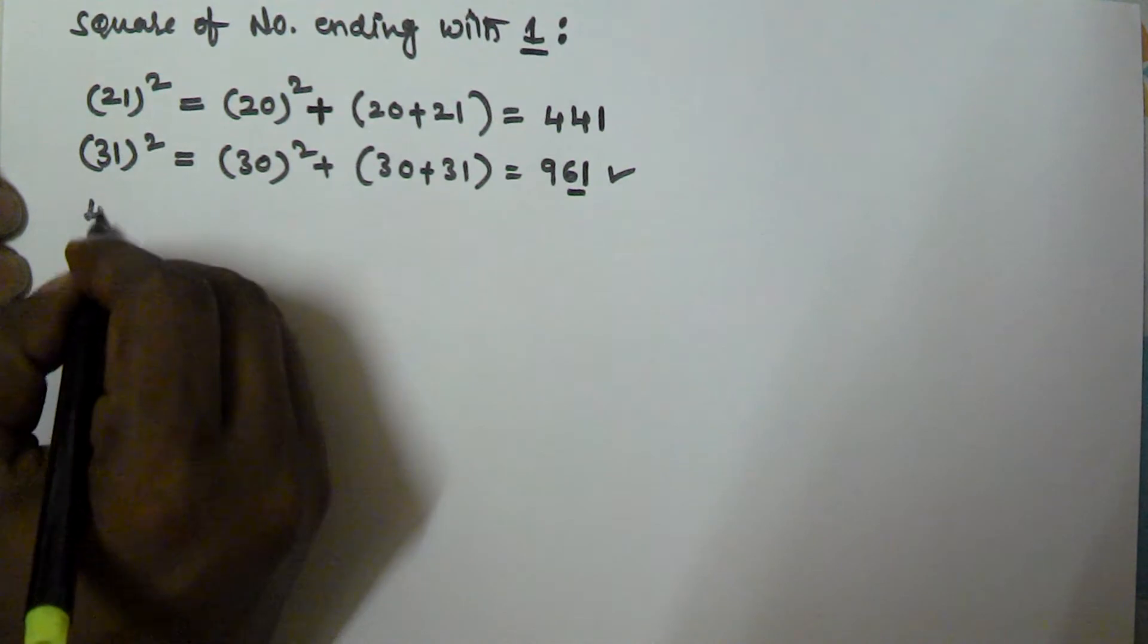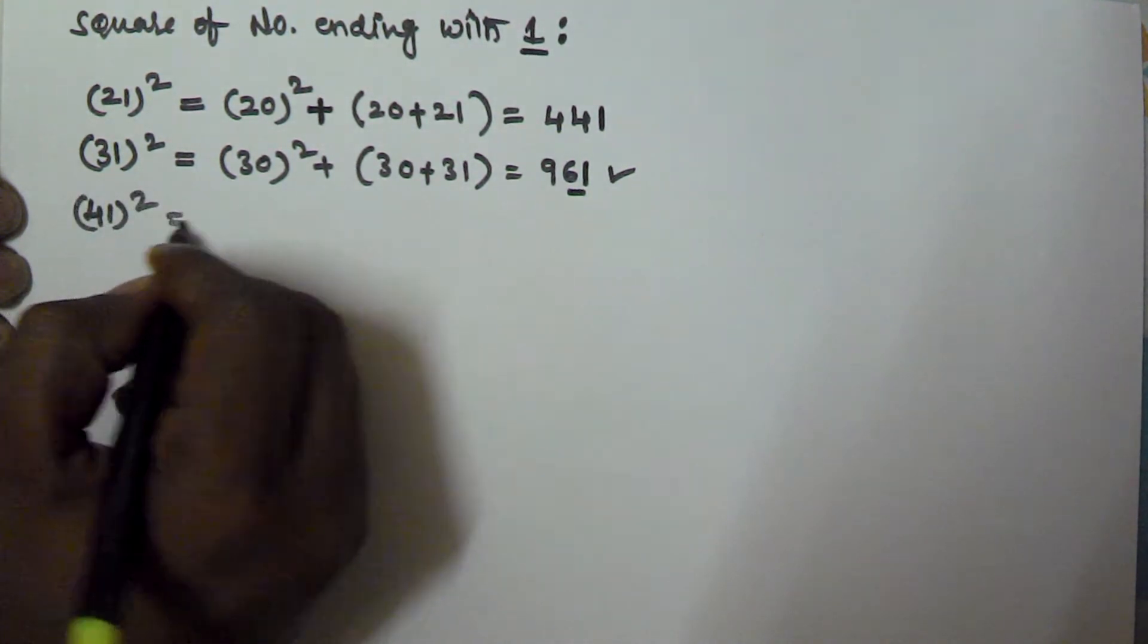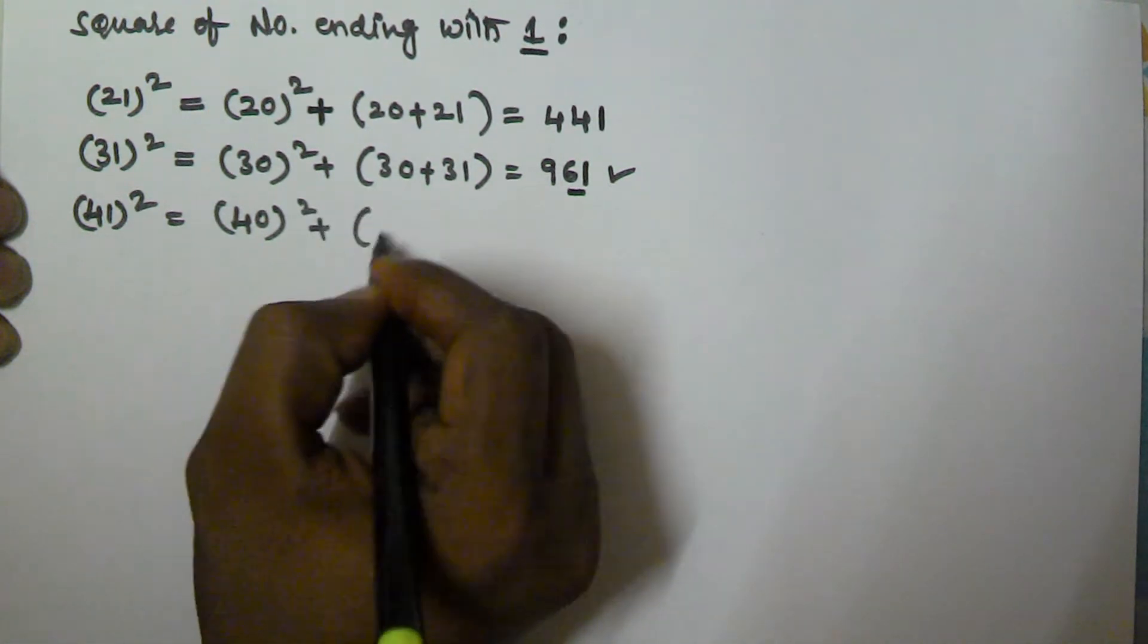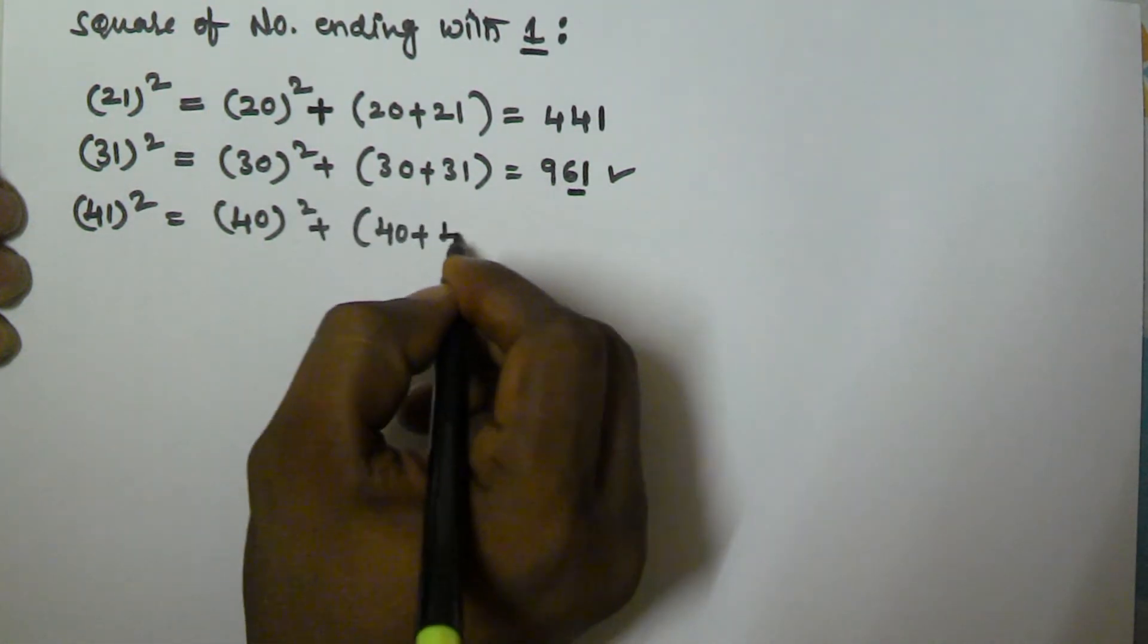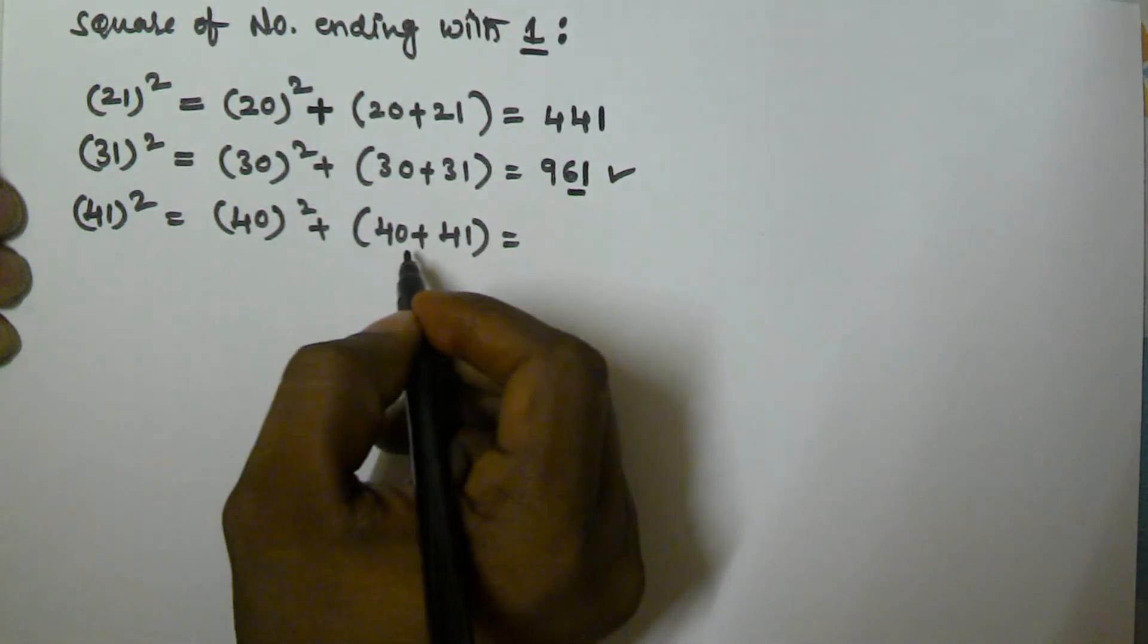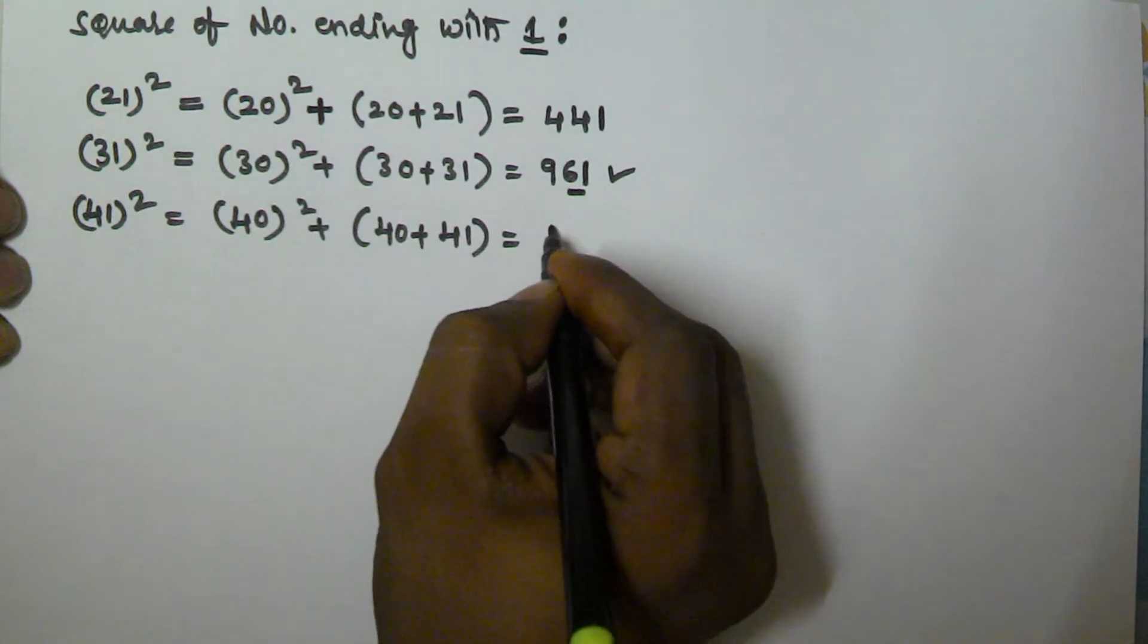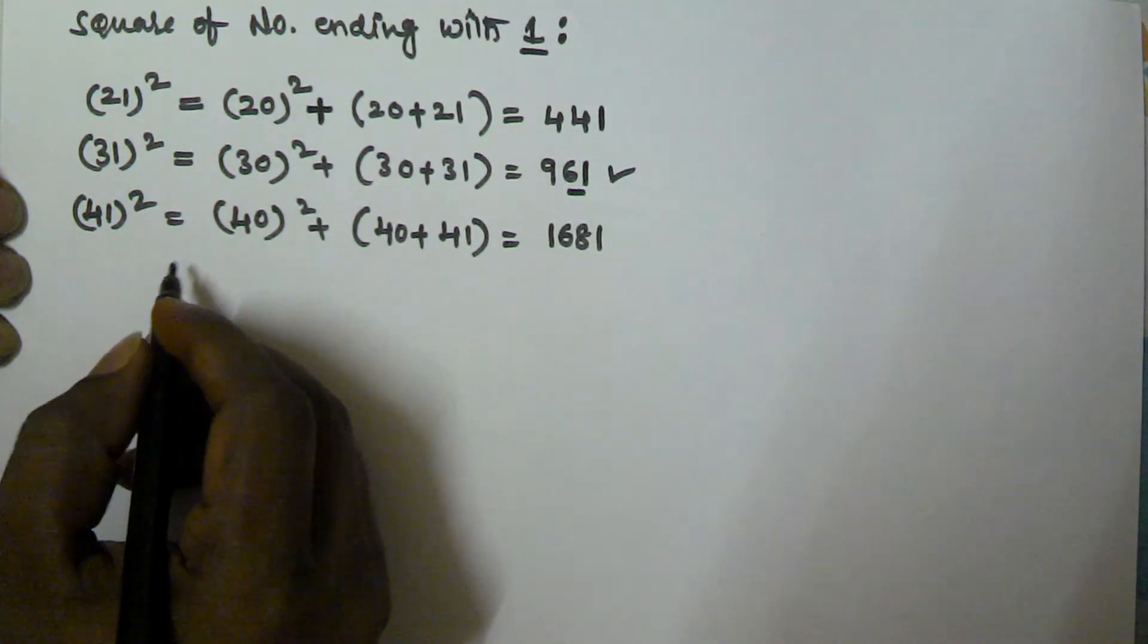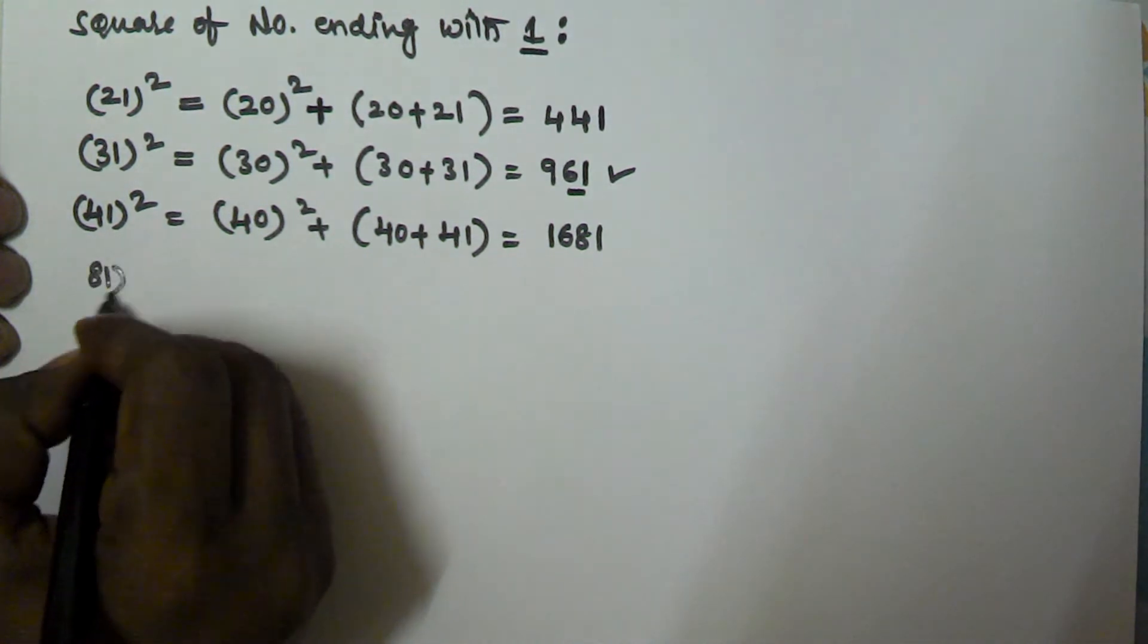So now let's take 41 square equal to 40 square plus 40 plus 41. This is 1600 and this is going to be 81, so the value is 1681. That is 41 square.